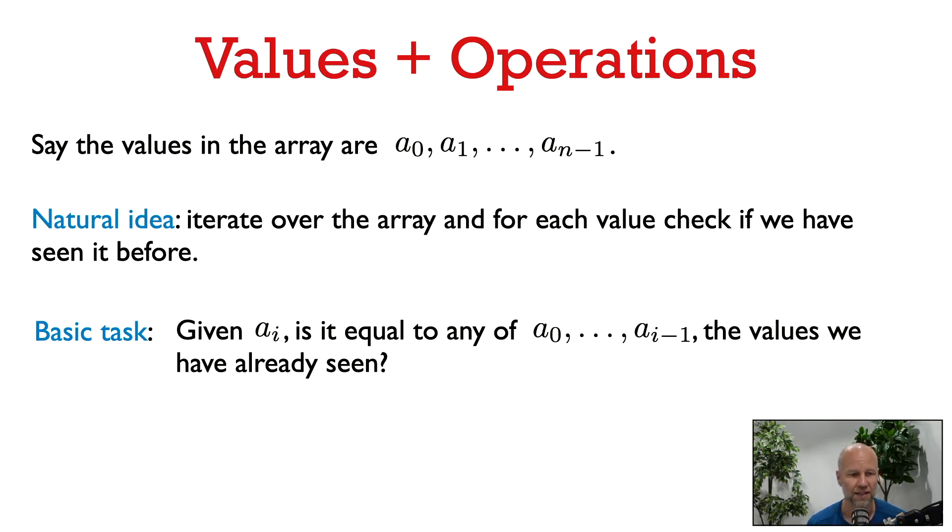I think a natural idea is to iterate through the array, and for each element ai, check if we have already seen this value before. So the basic task that we have to solve is, given an ai, is it equal to any of the previous values a0 through ai-1? So how can we solve this basic task?